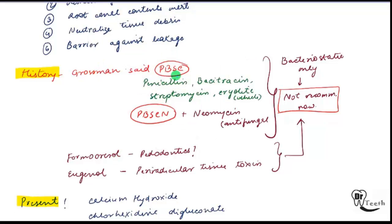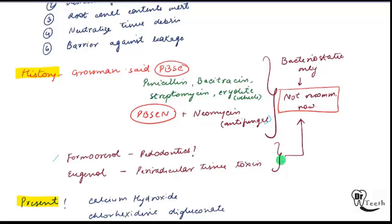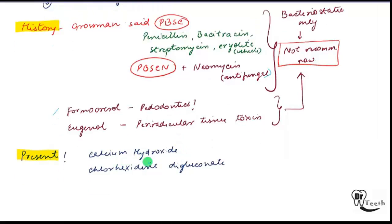Historically, PVSC was used — P for penicillin, B for bacitracin, S for streptomycin, and C for cryolite as a vehicle — and also PVSCN which adds neomycin as an antifungal. However, both have only a bacteriostatic effect and therefore are not recommended. Formacresol was also used — still used by pedodontists but not in adult endodontics. Eugenol is a periarticular tissue toxin, so these are also not recommended.